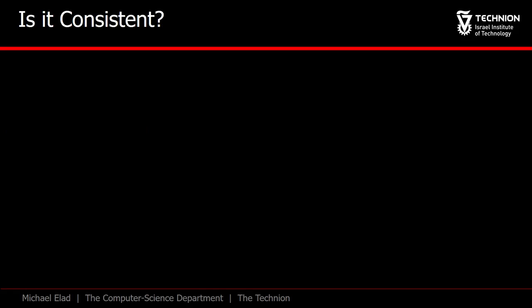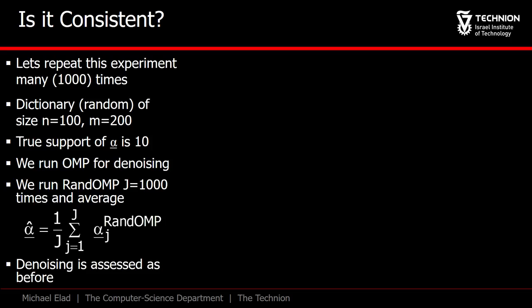Could it be that all this is an artifact of our specific experiment? We repeat this experiment 1,000 times, each time with a different and random initial sparse vector alpha zero. All the rest of the parameters remain the same, such as the size of the dictionary.